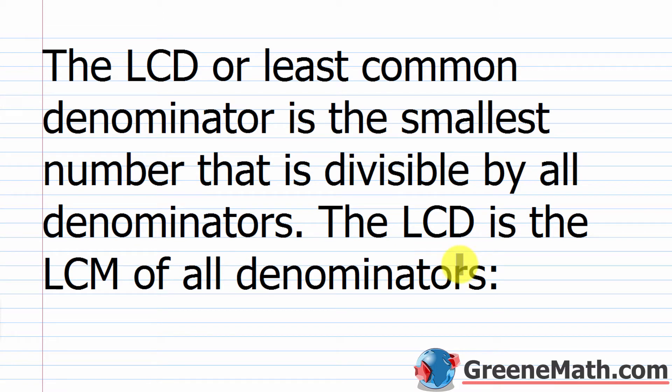A lot of students get confused when you start talking about LCD, LCM, GCF, and GCD. The LCM is the least common multiple. So you have two, three, four numbers, and you want to find the least common multiple. When we talk about the least common denominator, that's when we're working with fractions — we take the denominators and find the least common multiple of the denominators, and that is the LCD. So you can see how the LCM and the LCD are related.